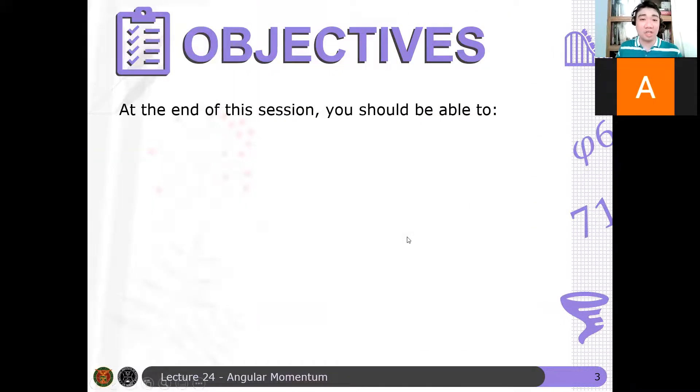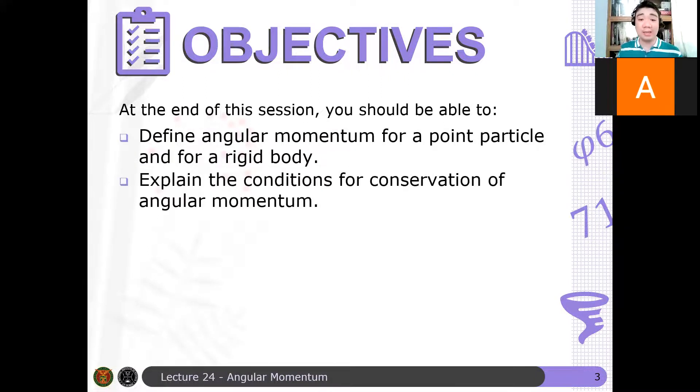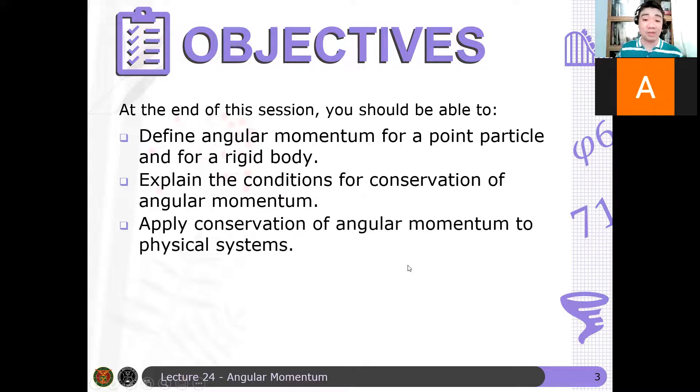Now, at the end of the session, you should be able to: first, define angular momentum for a point particle and for a rigid body; second, explain the conditions for conservation of angular momentum—what are the necessary ideas for us to say that angular momentum is conserved; and finally, apply conservation of angular momentum to physical systems. We will solve problems again.